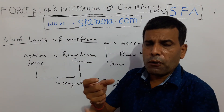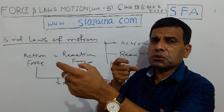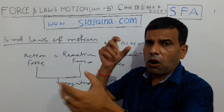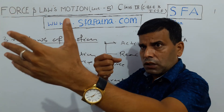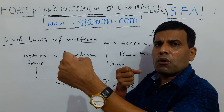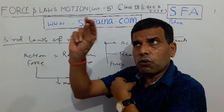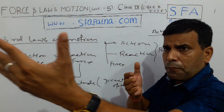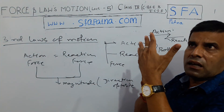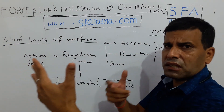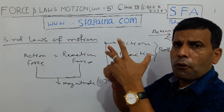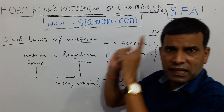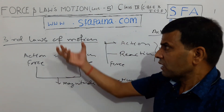Take the gun example: when the soldier fires, the bullet moves at very high speed because its mass is small. The gun recoils at low speed because the gun's mass is large. The force applied on both is equal, but since their masses are different, their accelerations are different. So do not confuse: equal action-reaction force does not mean equal acceleration.